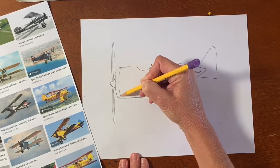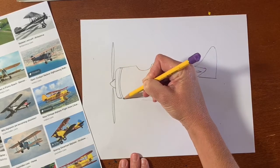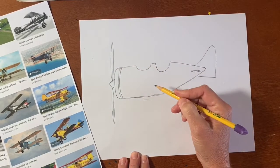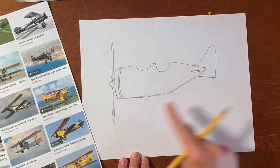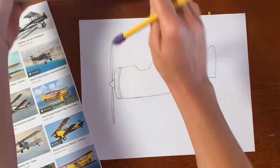Feel free to add rivets. Those are just kind of small dots along the edge. That's how a lot of these old planes were held together. Alright, let's look back at the reference.